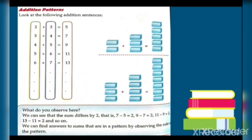The addition patterns: look at the following addition sentences — 2+3=5, 3+4=7, 4+5=9, 5+6=11, 6+7=13. Hum dekh sakte hain ki 5 aur 7 ke beech mein 2 ka difference hai, 9 aur 11 ke beech mein 2 ka difference hai. Aage bhi yahi pattern follow hoga: 13 ke baad 15, phir 17, phir 19.